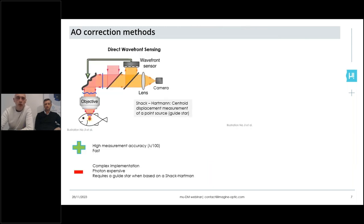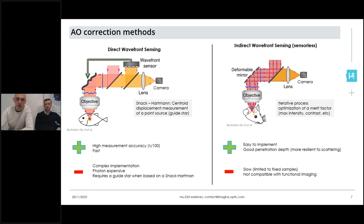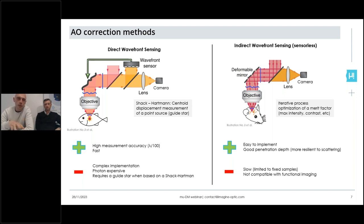There are two main ways to correct optical aberration in microscopy. The first is a direct wavefront sensing method that makes use of both a wavefront sensor — typically a Shack-Hartmann wavefront sensor — and a wavefront modulator, typically a deformable mirror. The wavefront sensor directly measures the aberrations and transforms this measurement into a set of commands to the wavefront modulator, running in a continuous feedback closed-loop system.